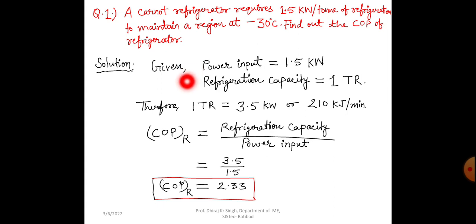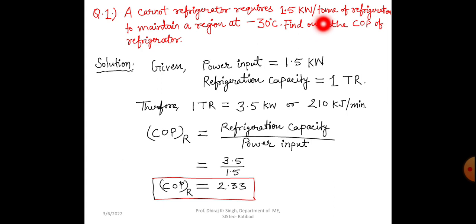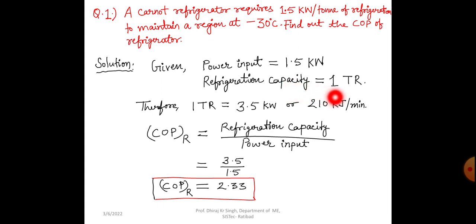Before solving any numerical we have to note down the given inputs. In this question, power input is equal to 1.5 kilowatt. Also, refrigeration capacity is equal to 1 TR (ton of refrigeration). We have already studied in our last class that 1 TR is equal to 3.5 kilowatt or 210 kilojoule per minute.